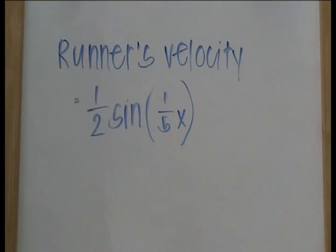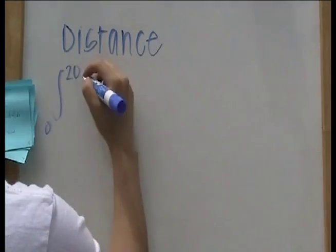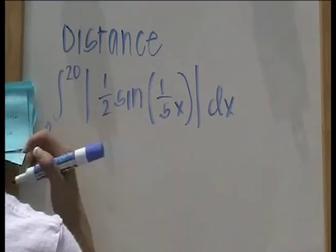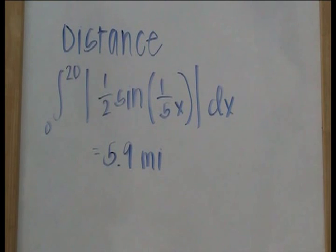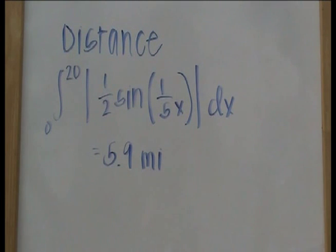The runner's velocity is given as 1 half sine of 1 fifth x miles per minute. For the distance, you take the integral from 0 to 20 of the absolute value of the velocity function, which gives the runner a total distance of 5.9 miles.